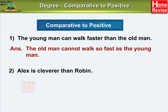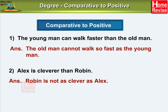Cleverer — what is the positive form of cleverer? It is 'clever'. So in our positive sentence, we will have either 'so clever as' or 'as clever as'. Your answer is: Robin is not as clever as Alex. It means that Alex is definitely cleverer than Robin. Look, we have not changed the meaning, but we have changed the degree of comparison.